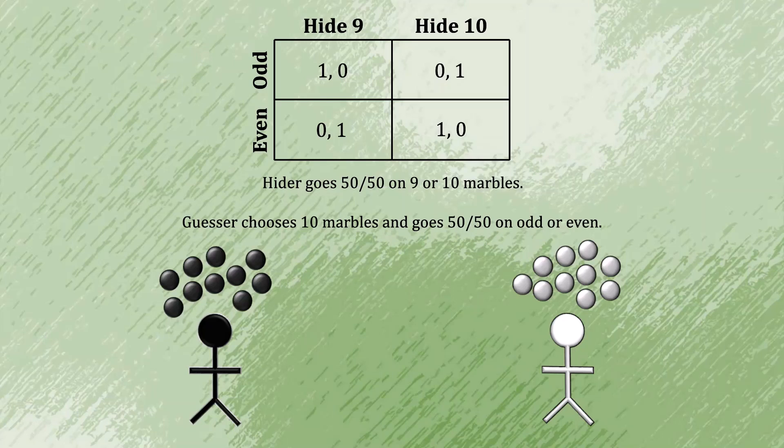Of course, we should also discuss why holding a different number of marbles is not optimal. From the hider's perspective, why not choose a different number, something smaller than 9, maybe 7? Well, if you were to do that, and you end up in the outcome where the guesser has chosen even and you have chosen to hide 7, you no longer have a guaranteed probability of winning.